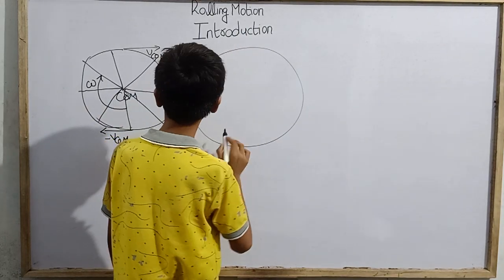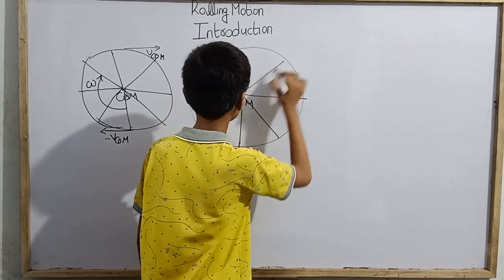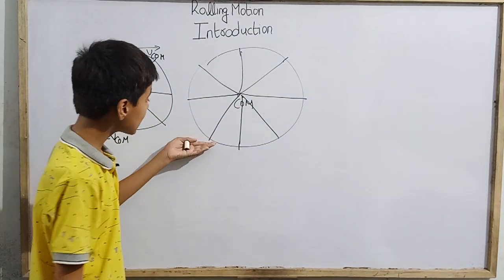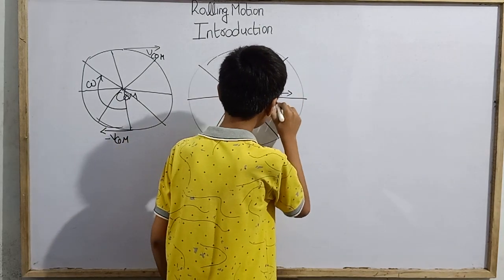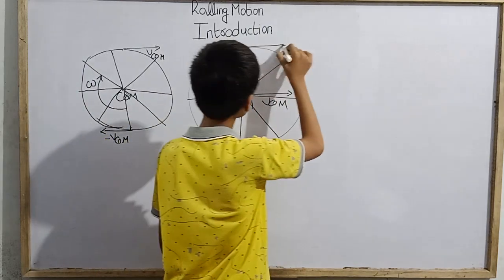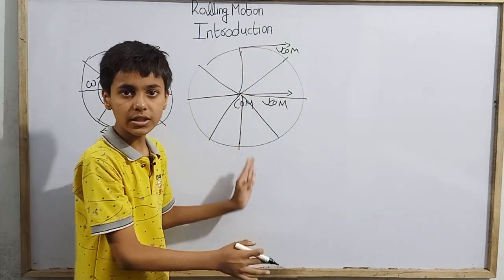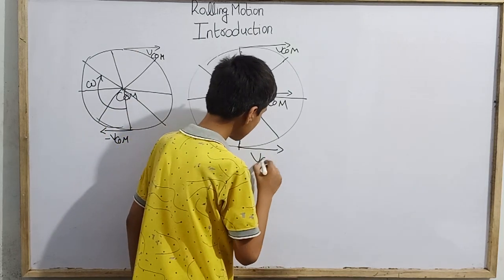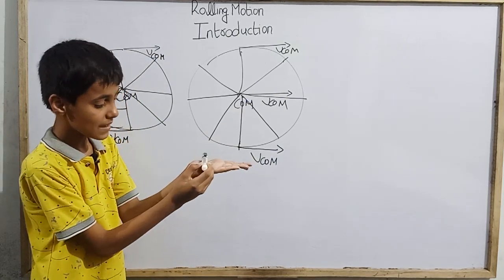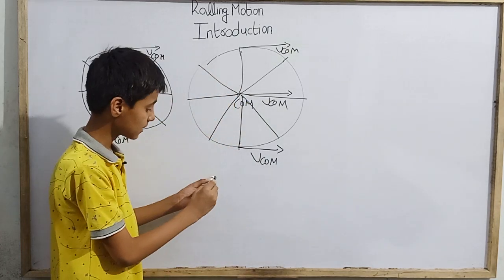Now consider pure translational motion: the wheel moves forward with no rotation. In this case the center of mass has speed V_COM, and all particles — top, bottom, everywhere — uniformly move forward with the same speed V_COM. There is no rotation, just the wheel sliding forward.